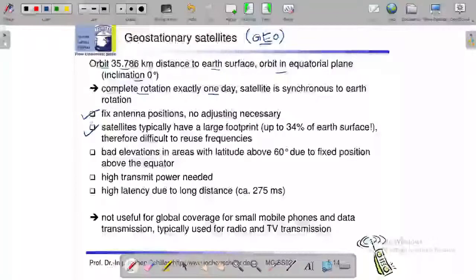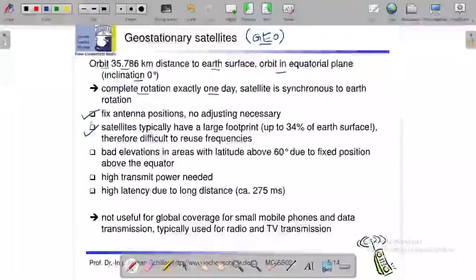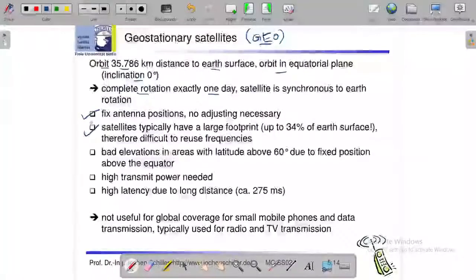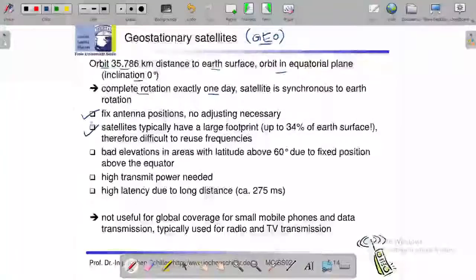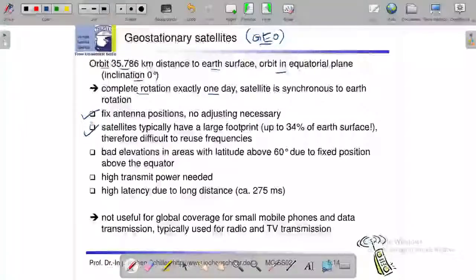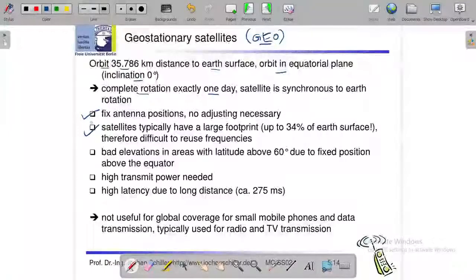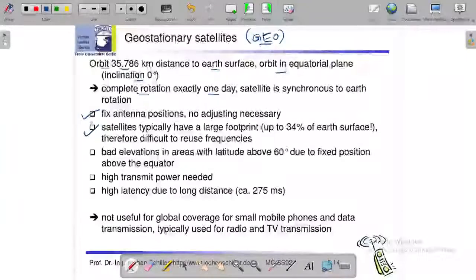So the geostationary satellite will be standing as it is, static as it is, not a moment because rotation. Satellites typically have a large footprint, therefore it is difficult to reuse the frequency. That is one of the disadvantages with geostationary satellite. This footprint we have a particular range, that is the base station and collect certain range of area. Frequency reuse concept we have seen in the video because the frequency reuse is not the next.